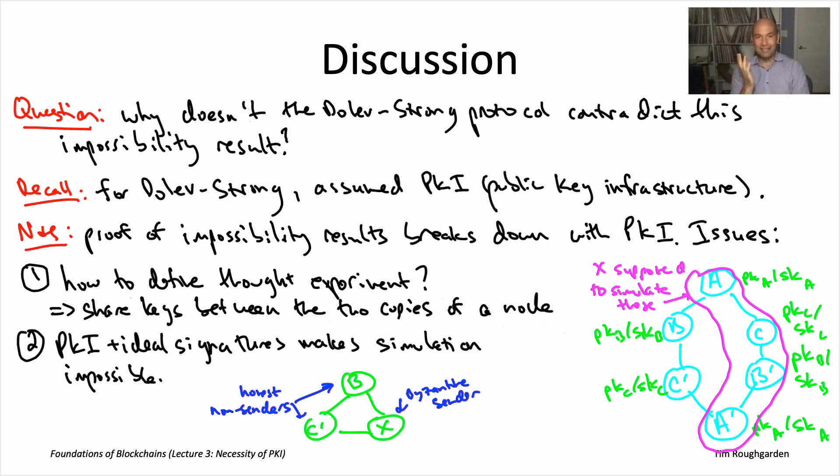But notice that is actually exactly what is required to carry out a faithful simulation of what's happening in the thought experiment in the bottom right. All right, the X is supposed to be simulating A, C, B prime, and A prime. For A and A prime, it can just make use of its own public key, private key pair. Okay, so it can just use that for A and A prime. But C and B prime, they're supposed to be using the same secret key as B and C prime. And again, remember, the Byzantine node does not know the secret key of B and C prime. So it cannot simulate the actions of C and B prime in the thought experiment.